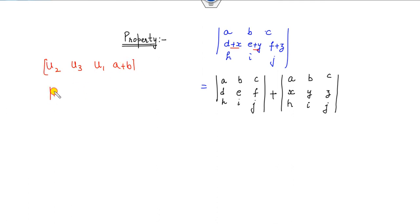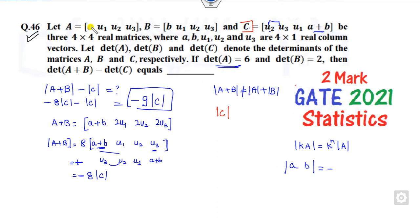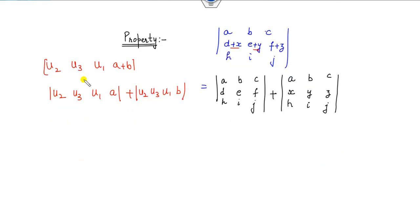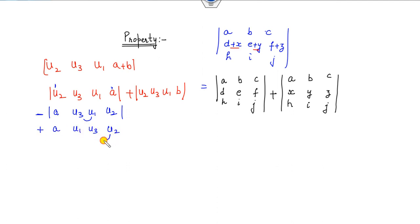We can write det(u2, u3, u1 of A+B) as det(u2, u3, u1 of A) plus det(u2, u3, u1 of B). Now A is [u1, u2, u3] and B is [u1, u2, u3]. Interchanging rows twice gives two negative signs, first interchange takes one negative, second interchange takes another negative making it positive, giving [u1, u3, u2]. One more interchange gives a negative, which equals det(A). Similarly, the same process gives minus det(B).